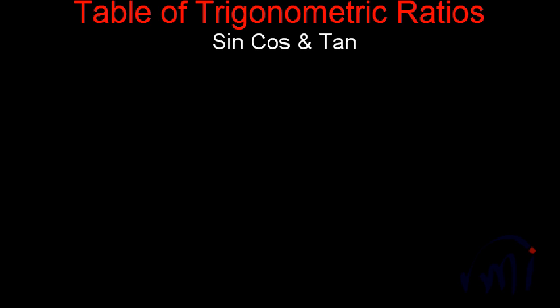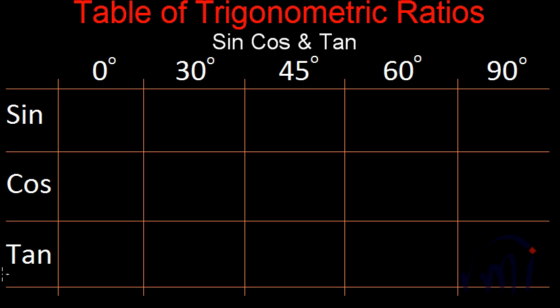First you create a table like this where sine, cos, and tan are written in the first column and then we have the values of angles written like this. 0 degrees, 30 degrees, 45 degrees, 60 degrees, and 90 degrees.